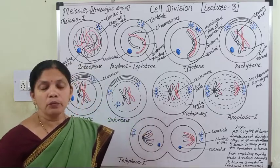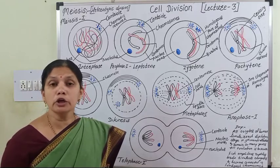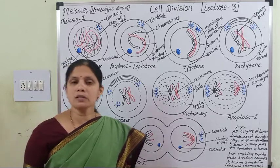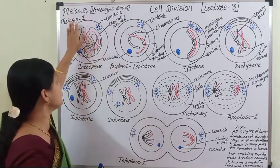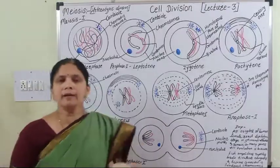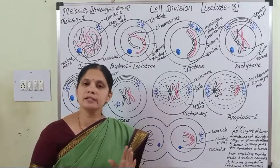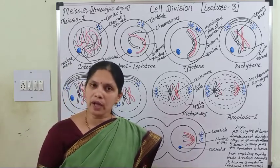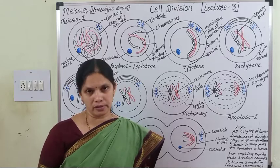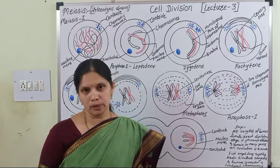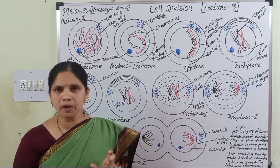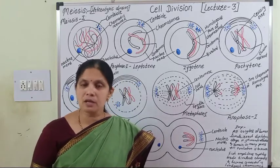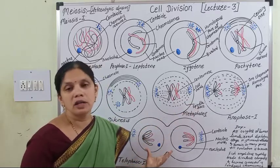Meiosis is mainly divided into two types: Meiosis I and Meiosis II. Meiosis I is again divided into two steps: karyokinesis I and cytokinesis I. Karyokinesis means division of the nucleus, and cytokinesis means division of the cytoplasm. Karyokinesis I is further divided into four stages: prophase I, metaphase I, anaphase I, and telophase I.